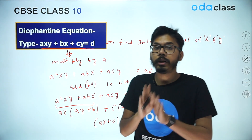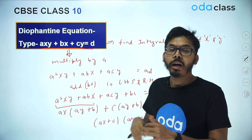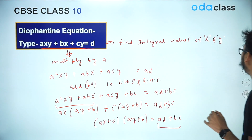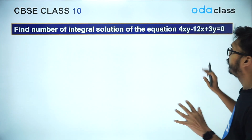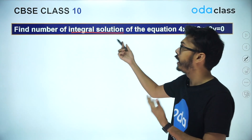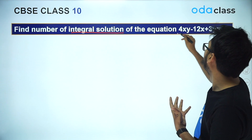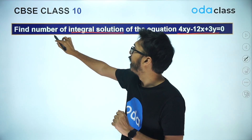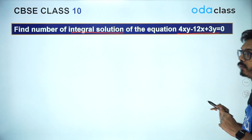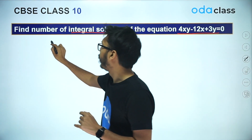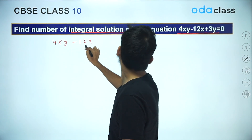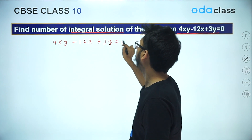I'm going to show you two examples based on this particular type so you'll have a better understanding. The first example is: find the number of integral solutions of the equation 4XY minus 12X plus 3Y equal to 0.